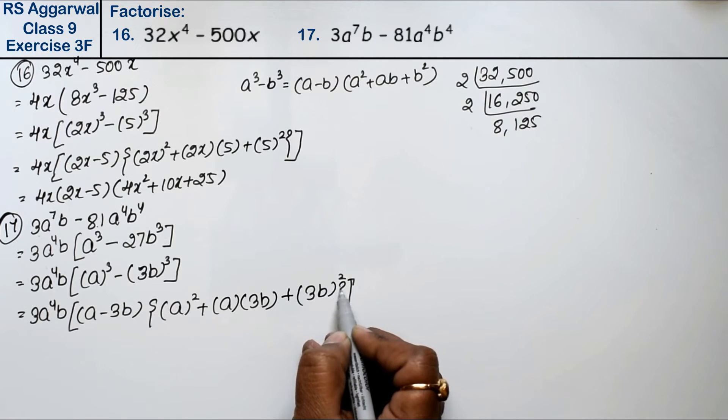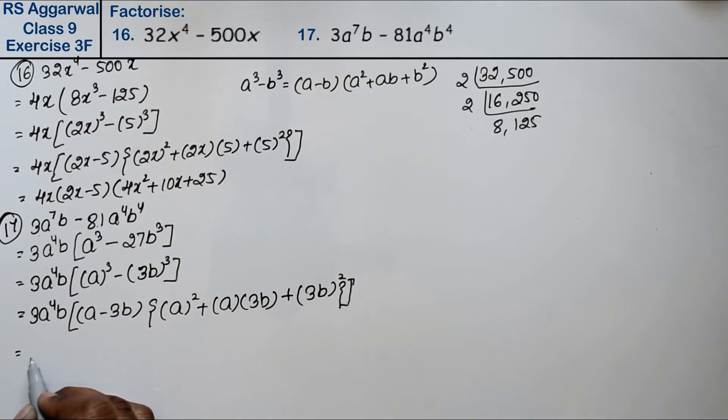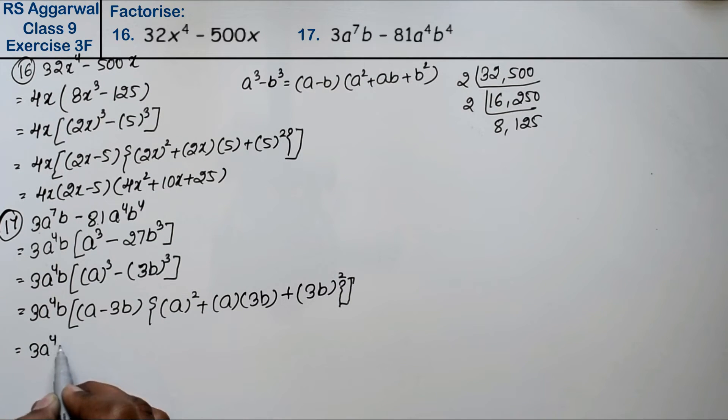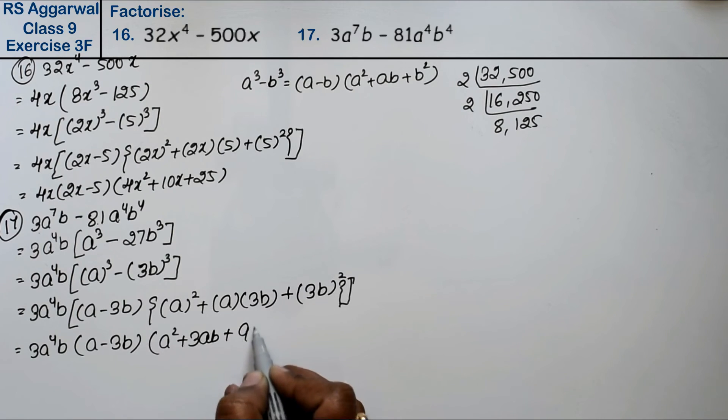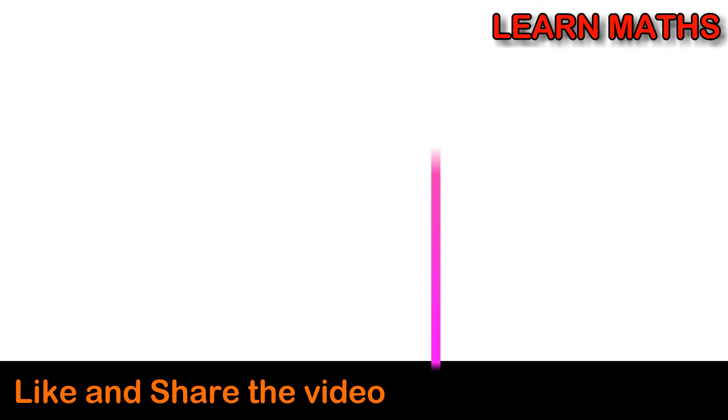The middle bracket also applies. So we get 3a^4b(a - 3b)(a² + 3ab + 9b²). This is the answer. Thank you.